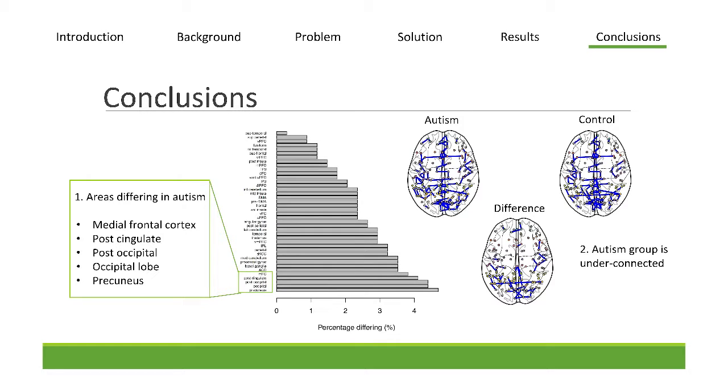And then finally, so that's all machine learning stuff. That stuff is applicable to a ton of different domains. These are the specific conclusions we get regarding autism.